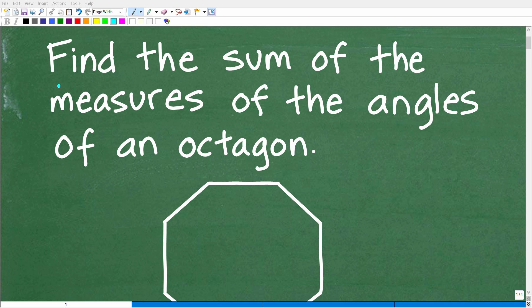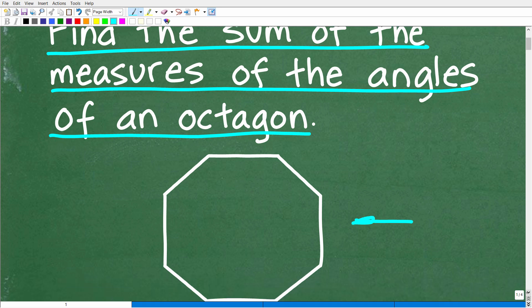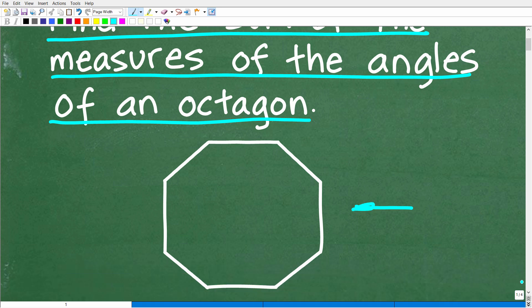Okay, so let's see if you can find the sum of the measures of the angles of an octagon. If you don't know what an octagon is, well, this is a basic sketch of an octagon. It is an eight-sided polygon, and the measures we're talking about here are the interior angles. We want to add up and find the sum of all the interior angles of this octagon.